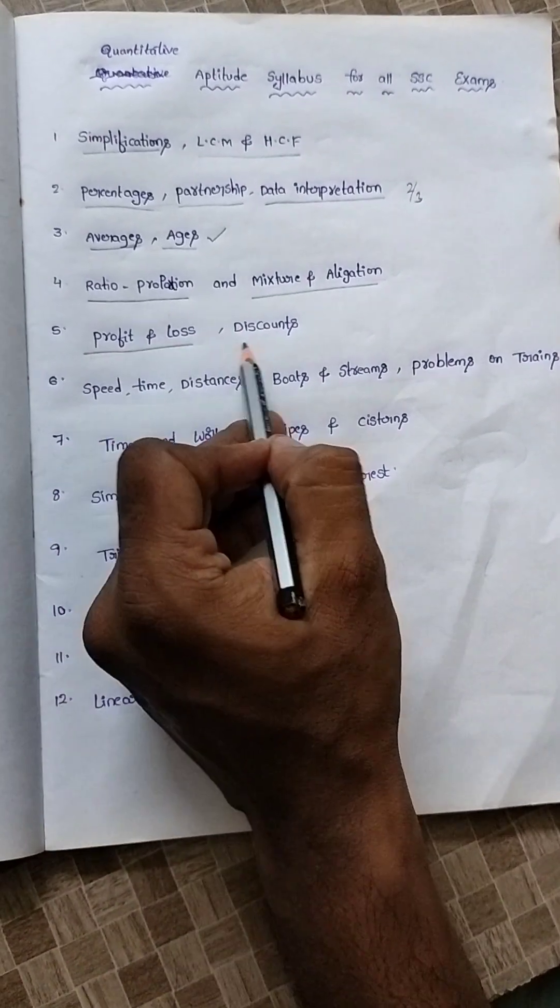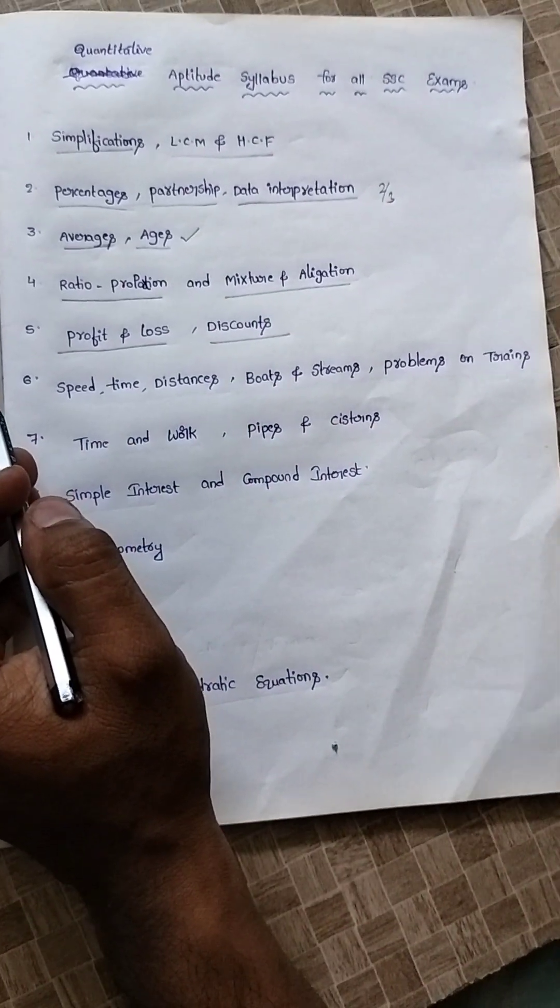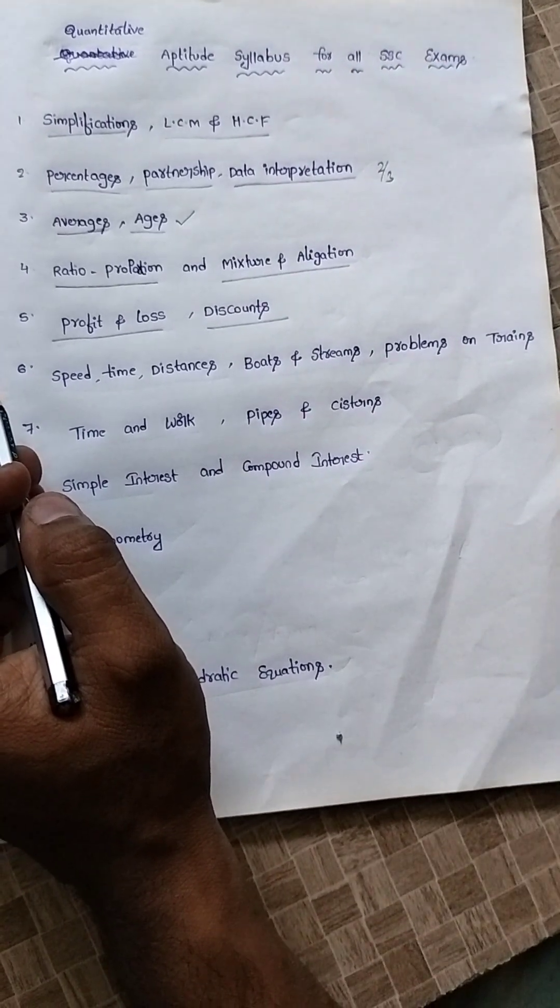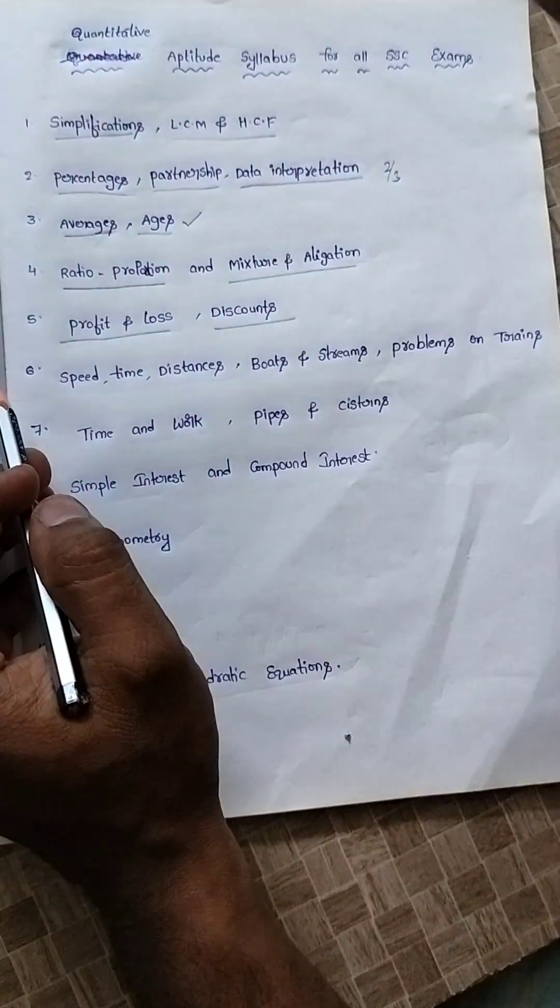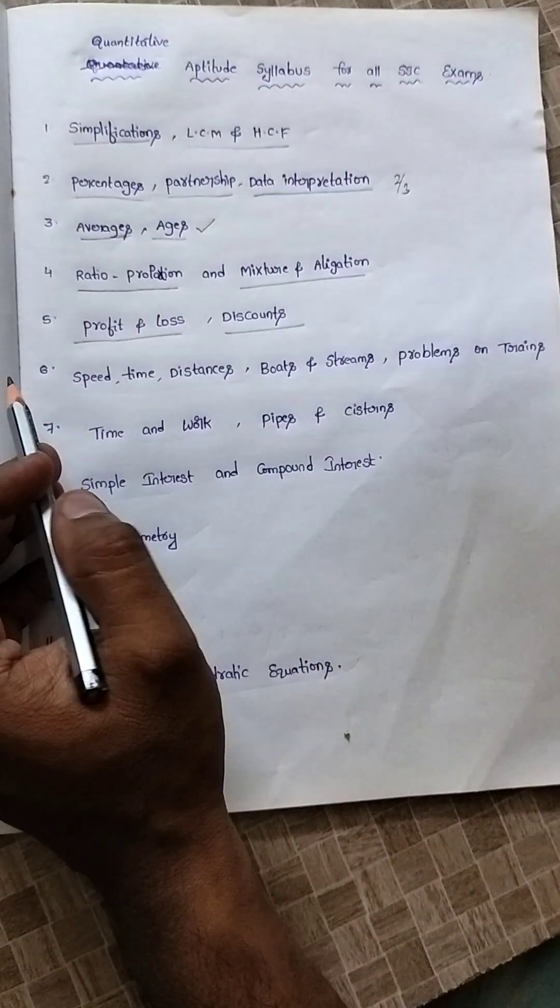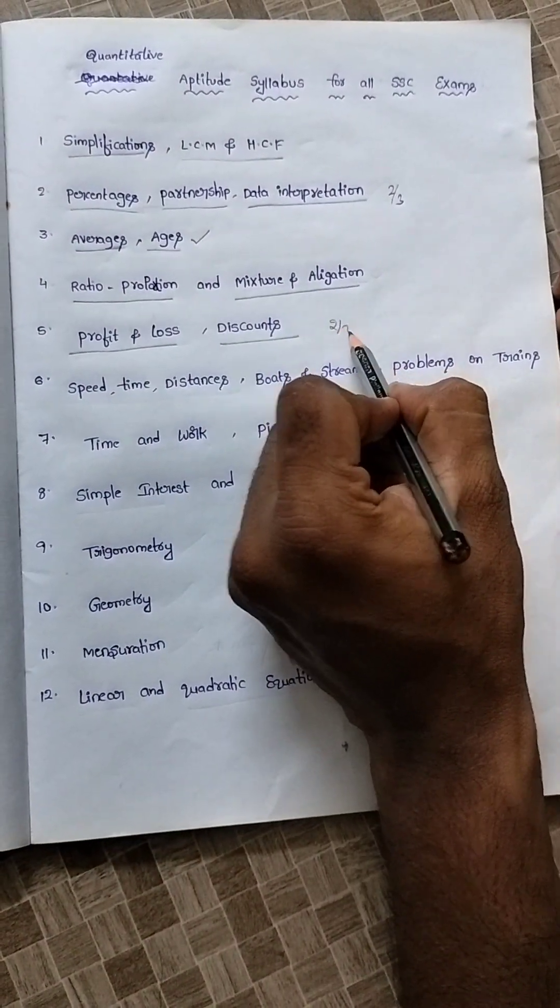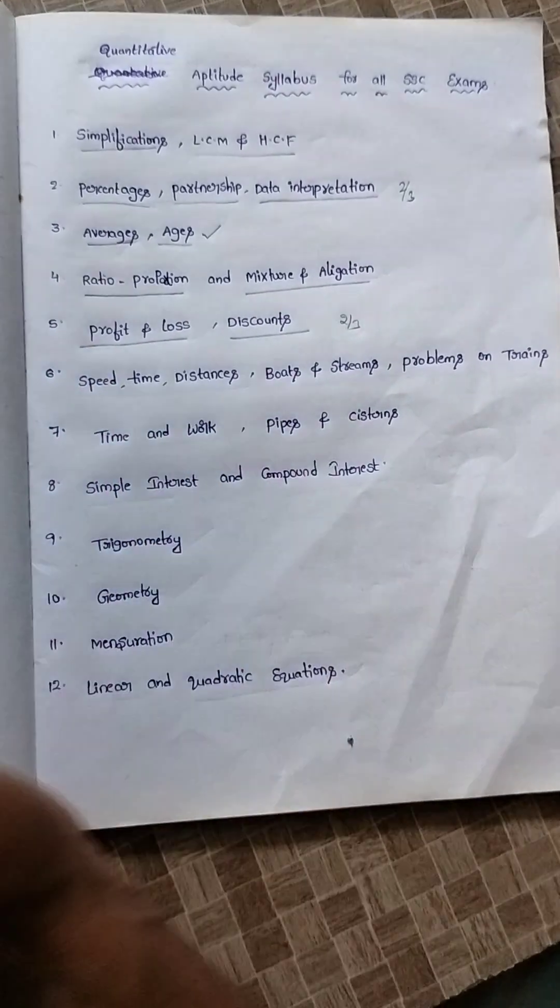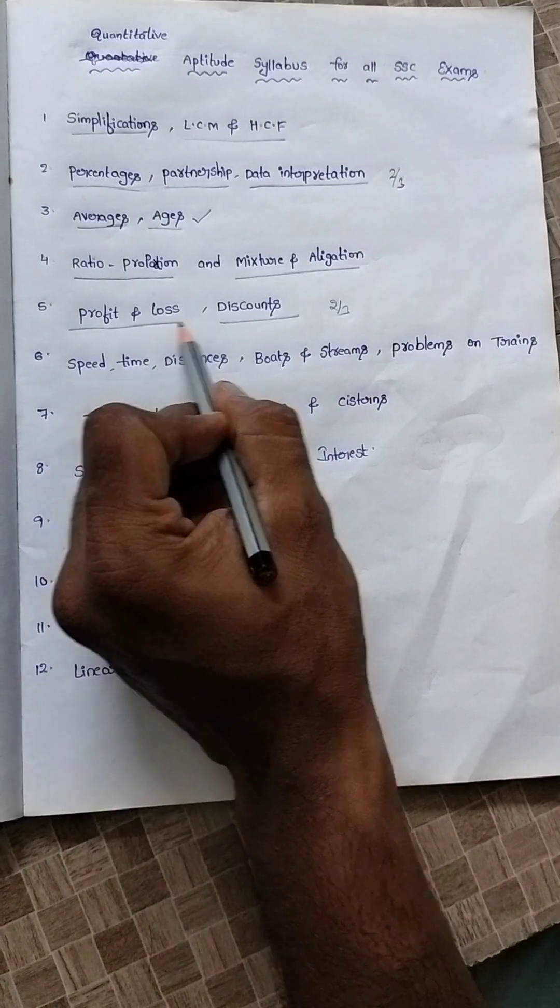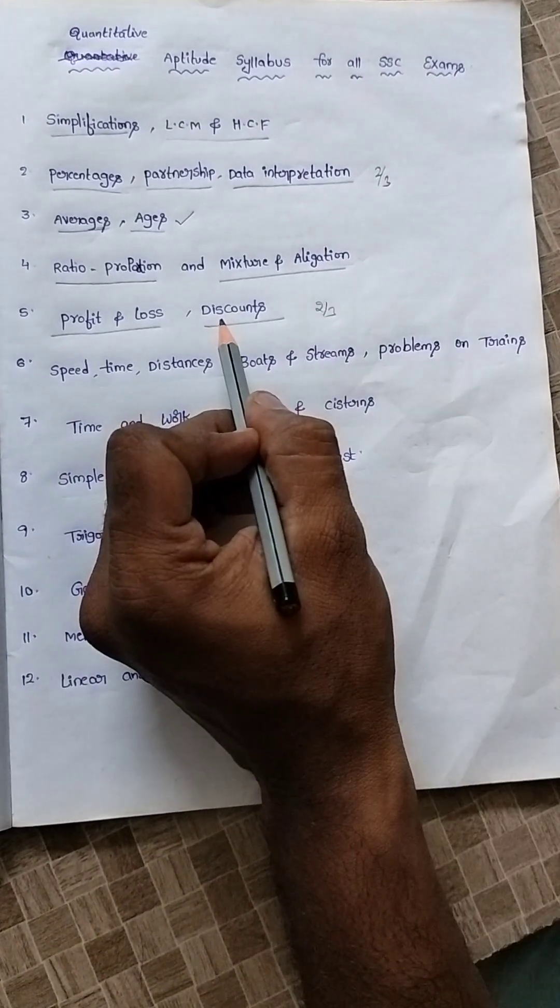After that, profit and loss and discount. Nowadays, every SSC exam is getting two or three questions from profit and loss only. If you take earlier examinations' previous year questions, then we will get two or three questions from profit and loss only. Sometimes they are giving both in one sum, like profit and loss, and it is having the discount sums also.